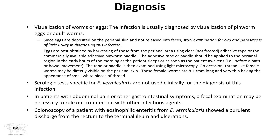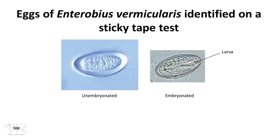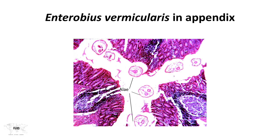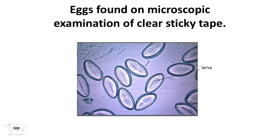The female worms are about a centimeter long and very thin, but can be visualized even without a microscope — they look like small motile pieces of white thread. The tape or paddle is examined under light microscopy. Serological testing is not used clinically. If abdominal pain is present, other tests are done to rule out secondary complaints rather than to diagnose pinworm. Images show unembryonated and embryonated eggs of Enterobius vermicularis and cross-sections of the organism in the appendix, as well as eggs found on the clear sticky tape under microscopy.